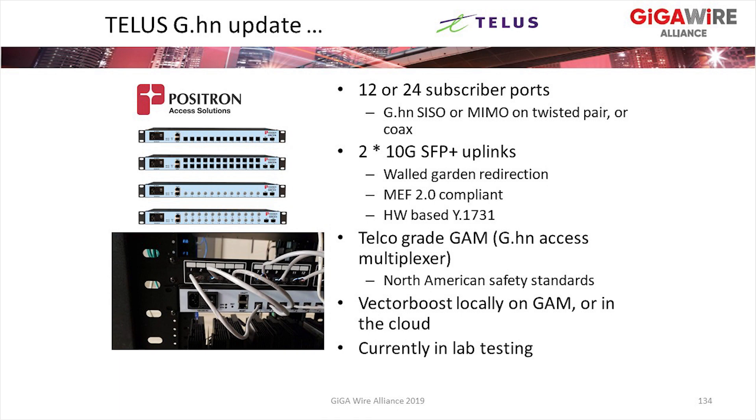We're also working on larger DPUs. About 10% of MDUs in Western Canada are over 100 suites, and we can't cover all of them with fiber — roughly 30% we've had to skip so far. We looked at 48-port G.fast but that sadly never panned out, so we're now looking at G.HN multiport DPUs. This shows one from Positron Access — 12 or 24 ports, SISO or MIMO on each port with no reduction in port density for bonding, and there's a coax variant as well. The KT Global GAMs used in South Korea are nice but in our opinion don't meet North American standards — some lack North American safety certifications. With this solution, we can run the crosstalk mitigation on the GAM itself or in the cloud, and we have this in lab testing now.